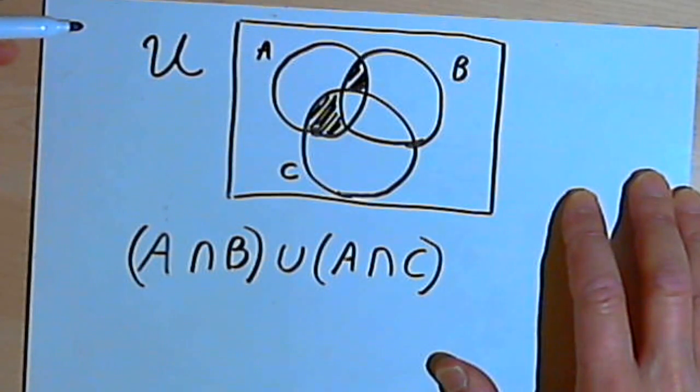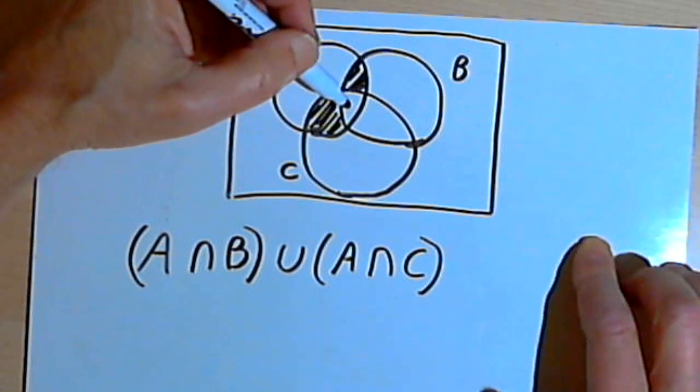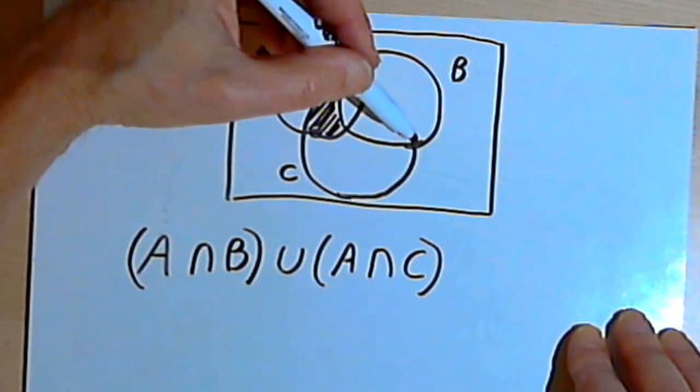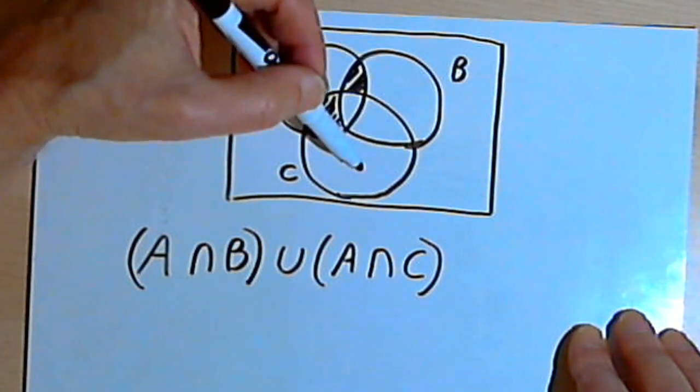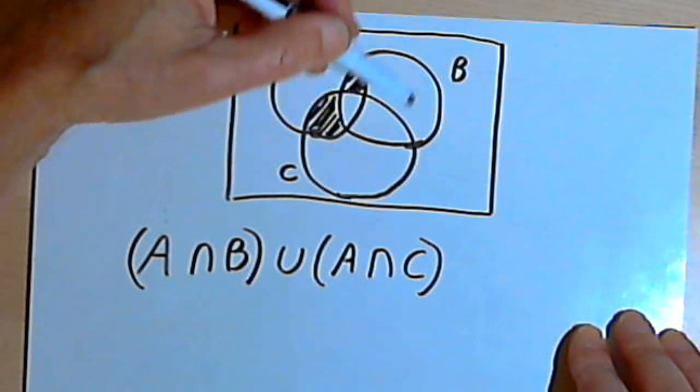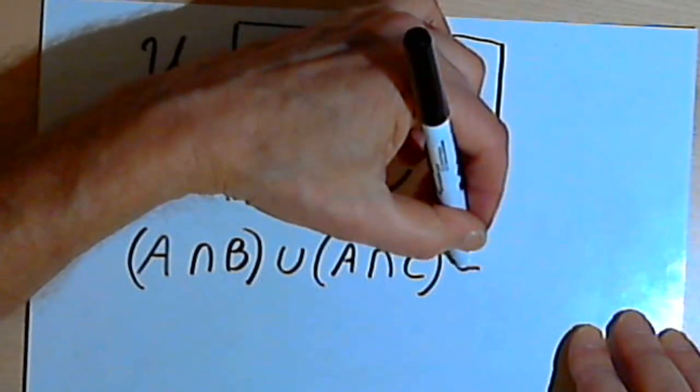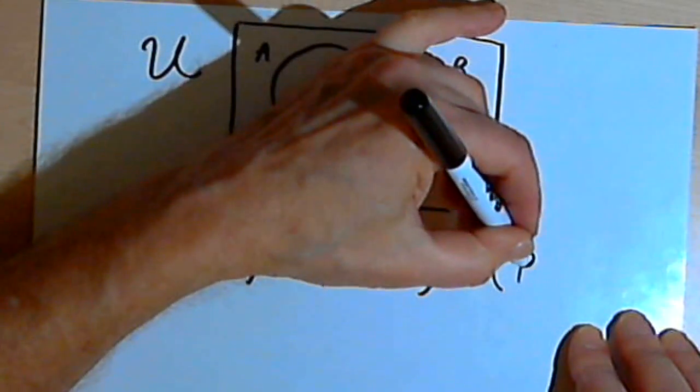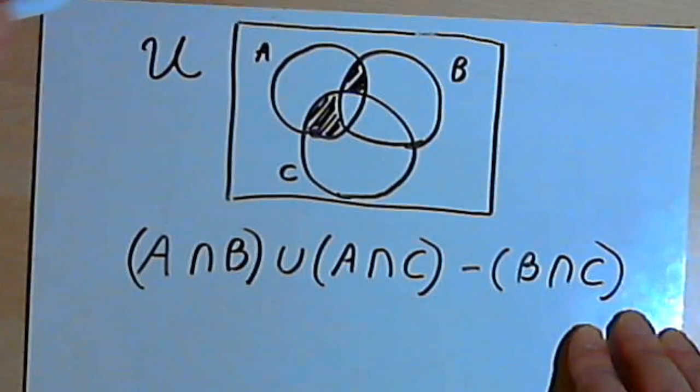Now if I leave it like that, those two intersections will be connected. But I've got that place right in the middle of these three circles, that little triangle area. What I could do is, I could take away anything that's in the intersection of B and C, of these two sets here, and that would get rid of that triangle. So I'll put in a minus sign, and I'm gonna take away anything that's in the intersection of B and C.